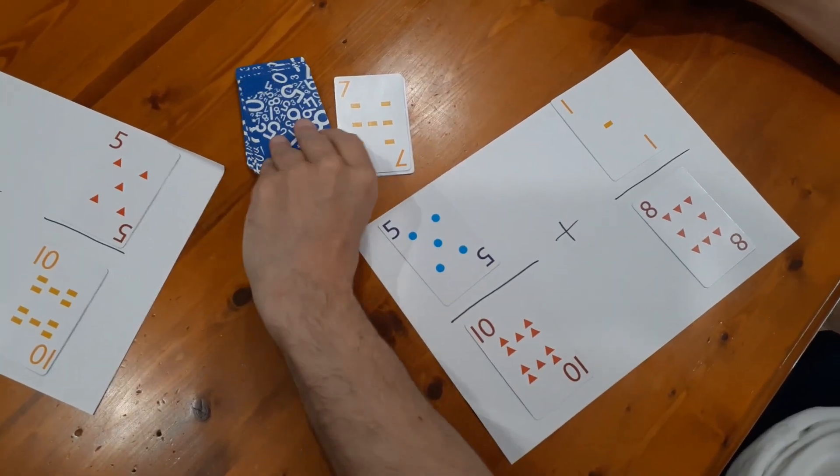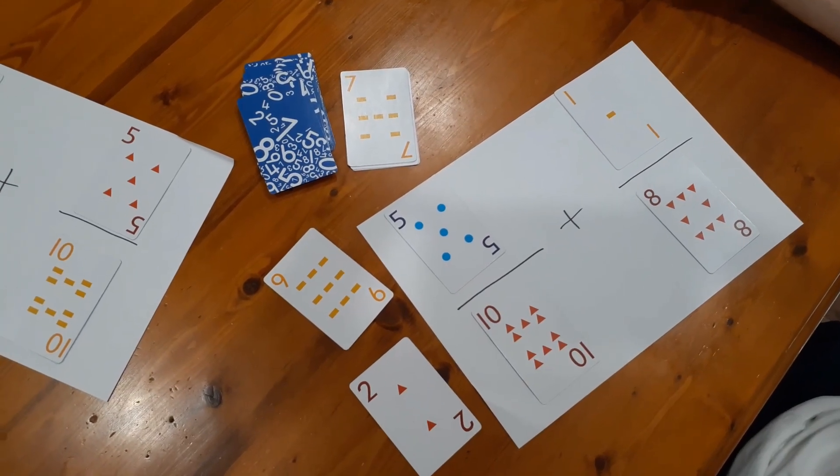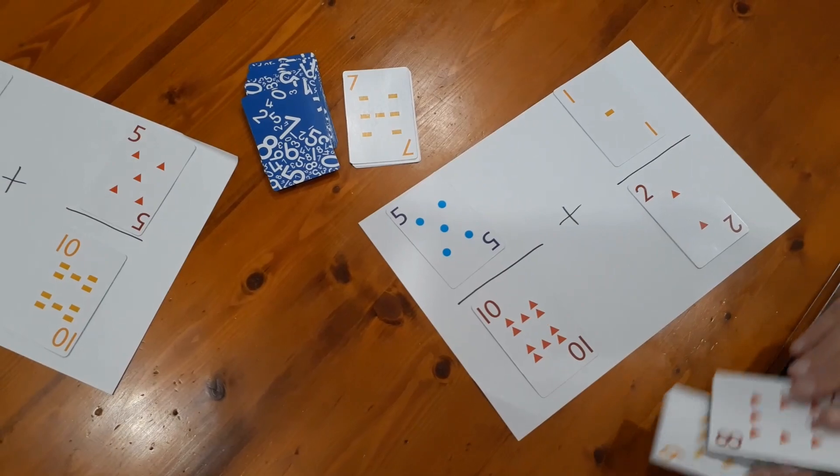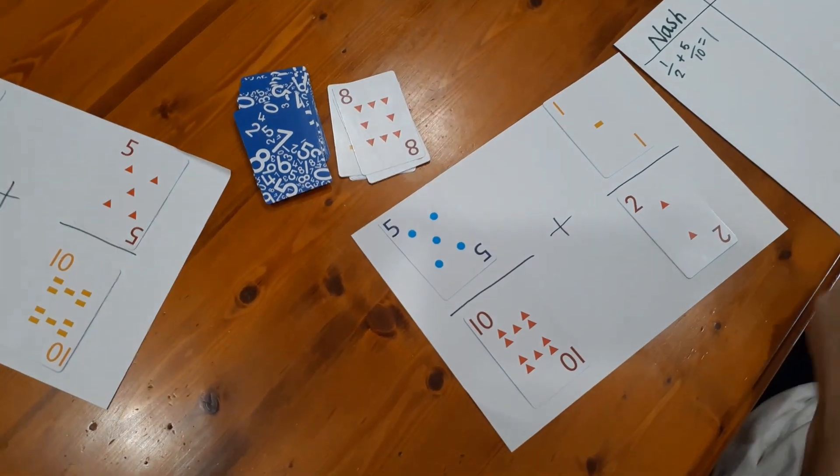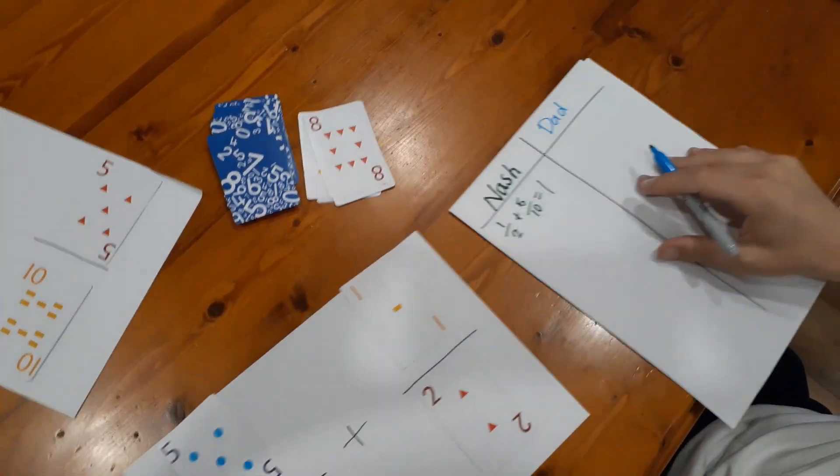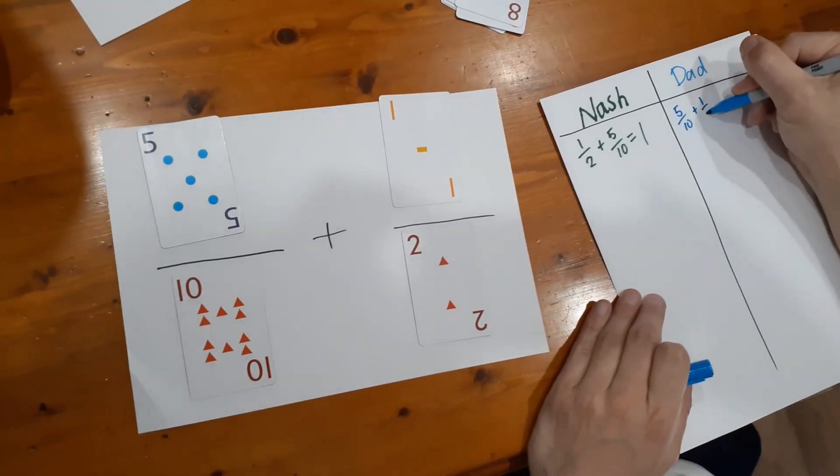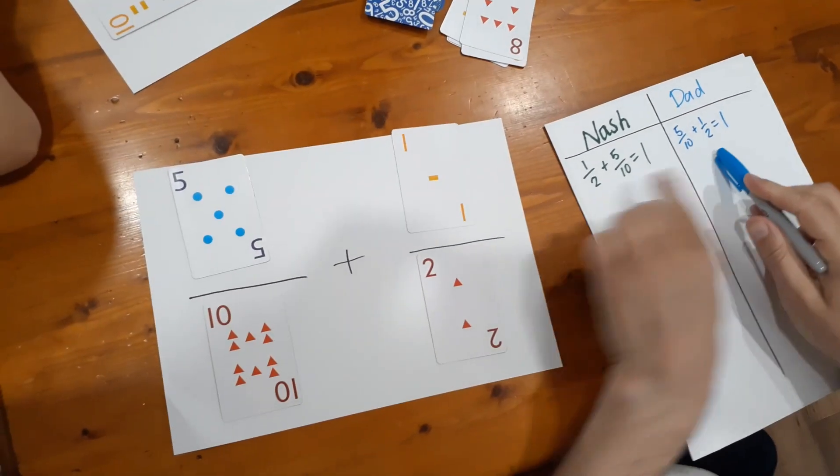I could take the seven as one of my cards, but that's not really going to help me, so I'm going to get my two cards from the top of the pile. And guess what Nashy, I can make the same equation that you made. Yeah, just the other way around. So we don't need to prove that one. But so over here I'm going to write in five tenths plus one half equals one.